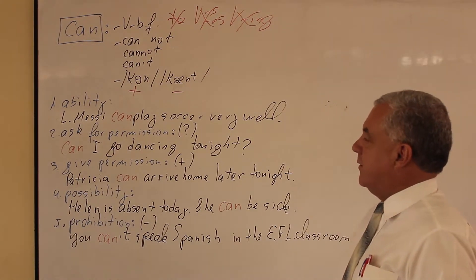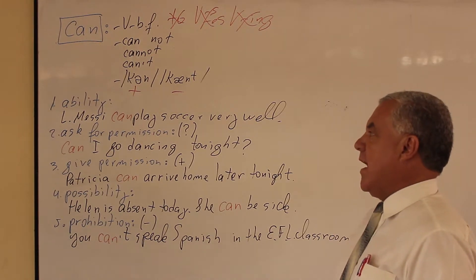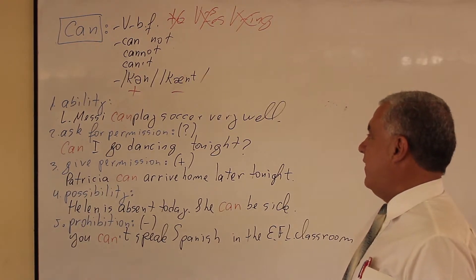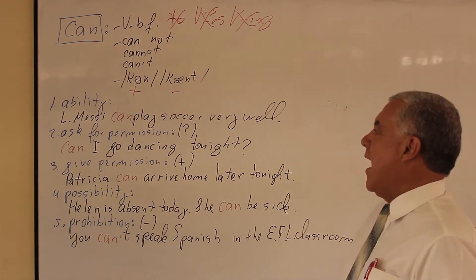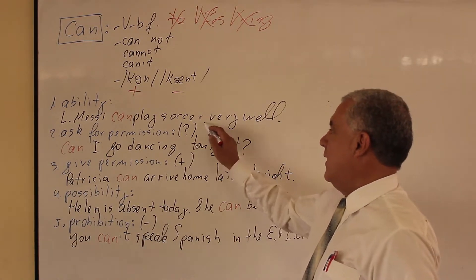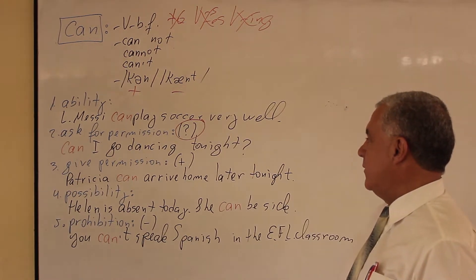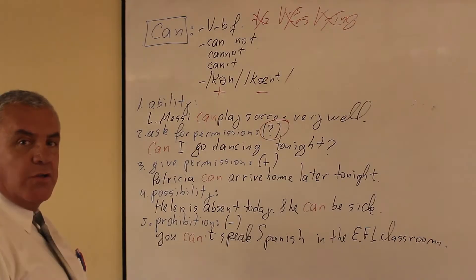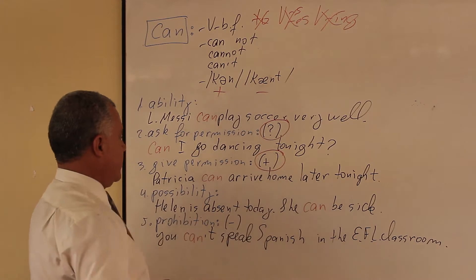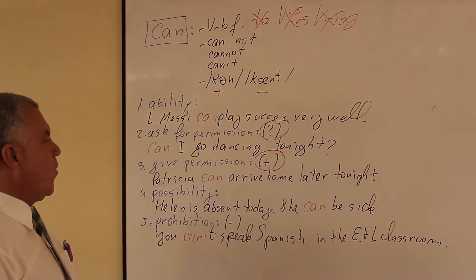The uses of CAN. Number 1: CAN is used to indicate ability. For example, Messi can play soccer very well. Another use of CAN is to ask for permission in questions. For example, can I go dancing tonight? Also, CAN is used to give permission in affirmative statements. For example, Patricia can arrive home later tonight.